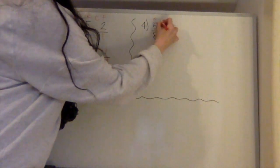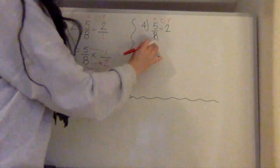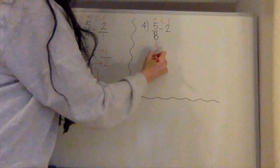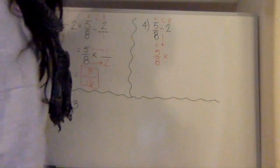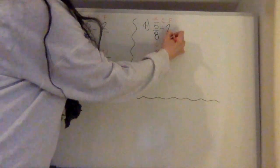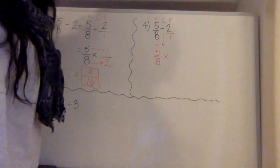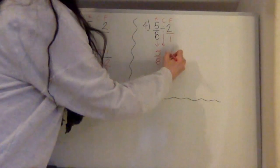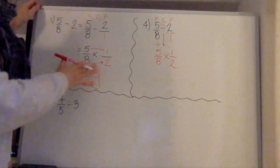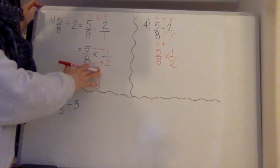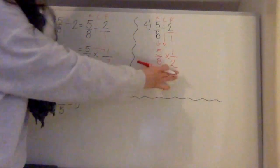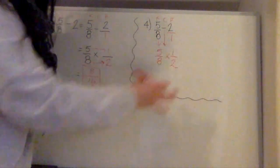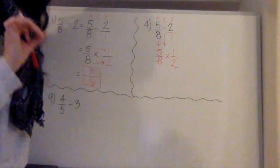So we're going to do keep, change, flip. We're going to keep that 5/8. We're going to change the division to multiplication, and we're going to flip the 2. In order to do that, I'm going to put it over 1, and it becomes 1 over 2. And as you can see, I've got my number here. We already did it, so we already know what the answer is going to be, but now we've written it as multiplication by the reciprocal. That's all you have to do for that chunk of questions.